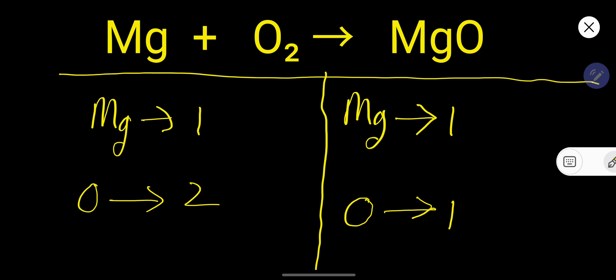So to balance oxygen, you can multiply here by 2, that gives you 2. If you multiply by something, that something must come before the atom. So this oxygen has come from here, so place 2 as a coefficient here.